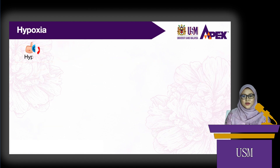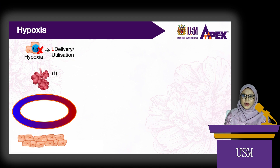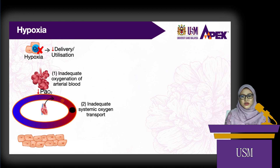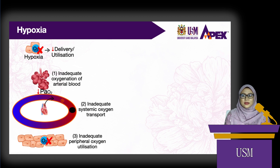Hypoxia is a decrease in oxygen delivery to the tissues, or a decrease in oxygen utilization by the tissues. There are three mechanisms of tissue hypoxia. One: inadequate oxygenation of arterial blood, which can result in reduced arterial pressure of oxygen. Two: inadequate systemic oxygen transport, which can be caused by decreased cardiac output, decreased hemoglobin or red blood cells, or local obstruction in the blood vessel. Three: inadequate peripheral oxygen utilization, meaning impairment in oxygen utilization by the tissues.